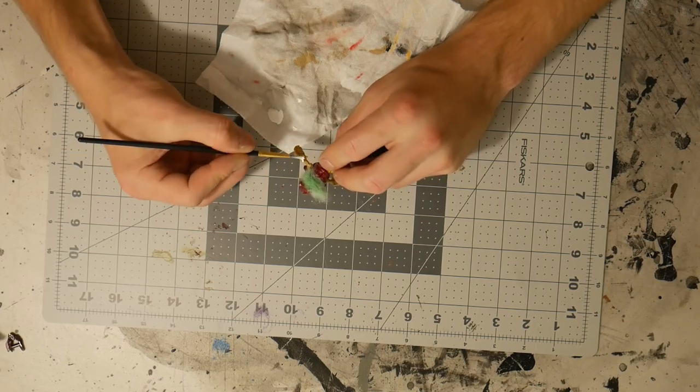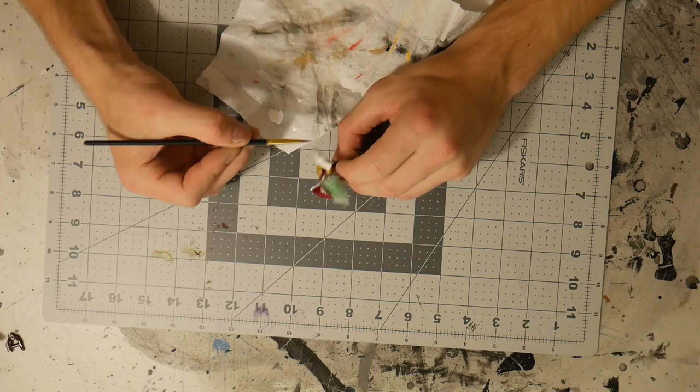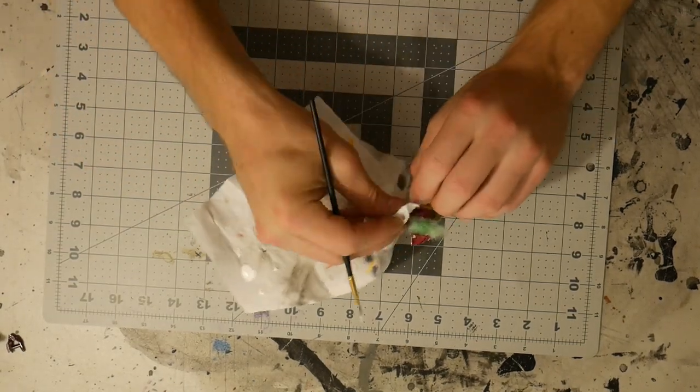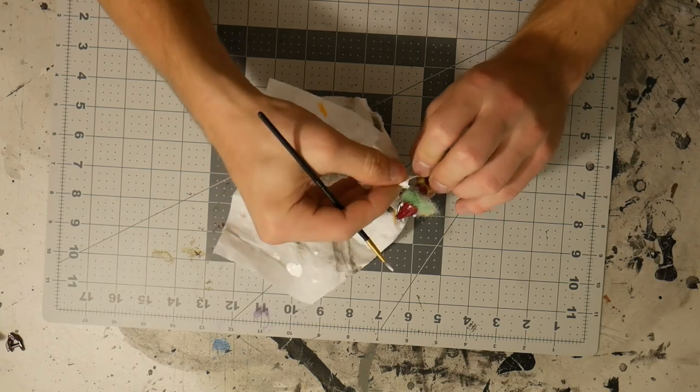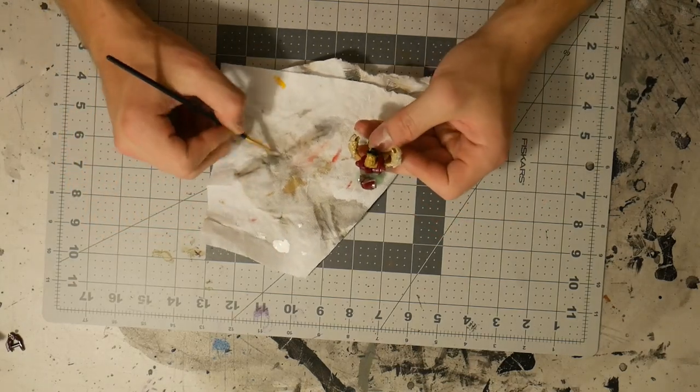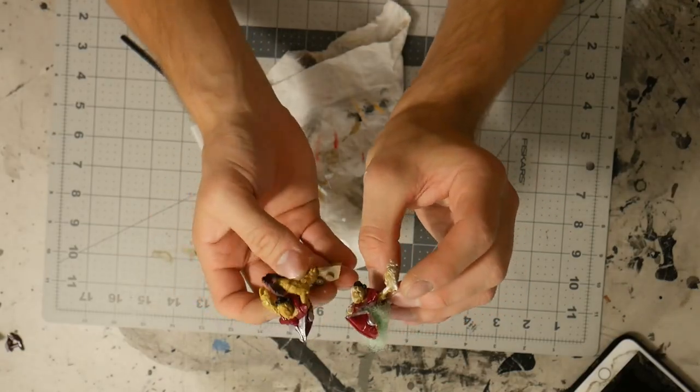And we're also going to be doing a wash. And what a wash is, a wash is where you wash the figure with black paint. And it basically goes into all the little nooks and crannies and makes it look even better. So we got that. See a little bit of white and he's a little bit too white right now. We'll fix that.